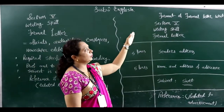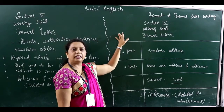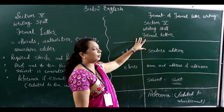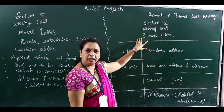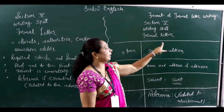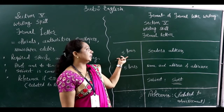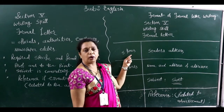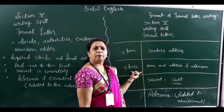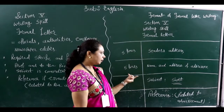Now we discuss the format of formal letter writing. If a question asks about a formal letter, first mention section 5 in your answer sheet, then writing skill, then specify which letter you are writing — formal or informal. After leaving one line, write the sender's address — a proper 5-line address. After that, write the name and address of the addressee — the person to whom you write — also in 5 lines.